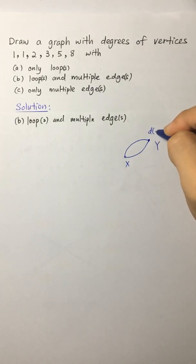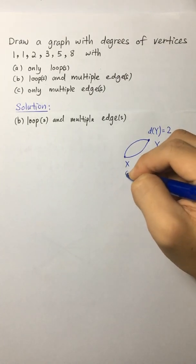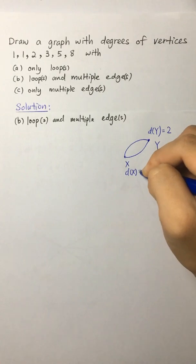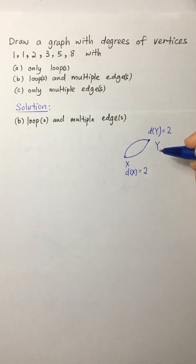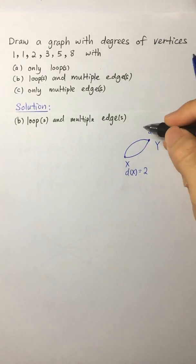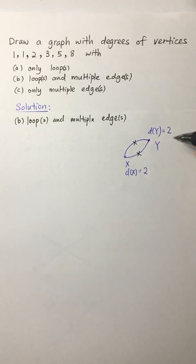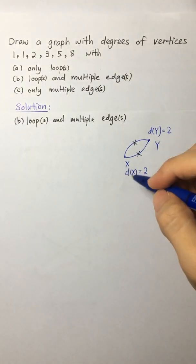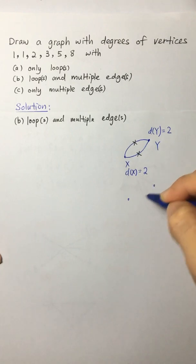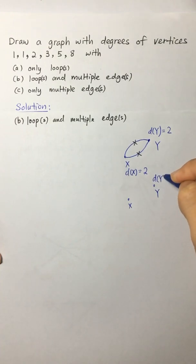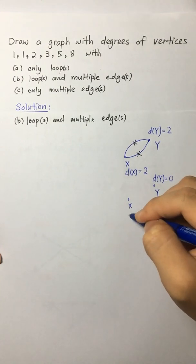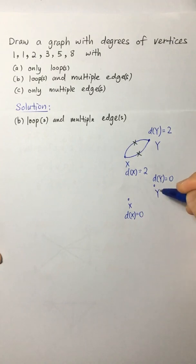And now we find the degree of vertex. dy is actually 2 and dx is 2 as well. So if you try to remove the multiple edges, it's in a pair. So when we remove it, we left with two isolated vertices X and Y. And now dy is 0, dx is 0 because both of these are isolated vertex.